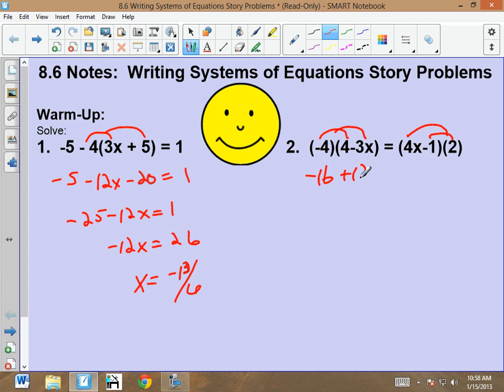Negative 16 plus 12x equals 8x minus 2. I'm going to move the smallest number with a letter first, so that's going to give me 4x. And when I move the 16, that's going to give me 14. So x is going to equal 7 over 2.